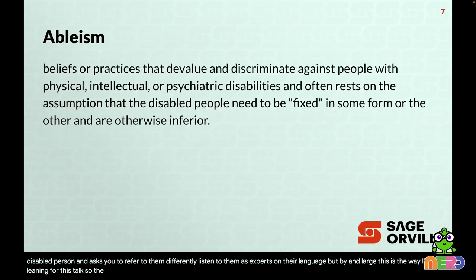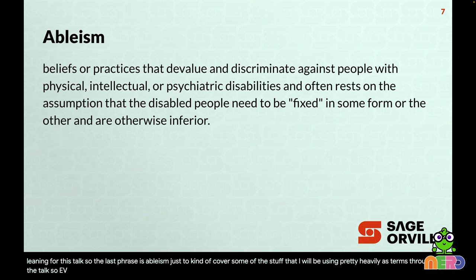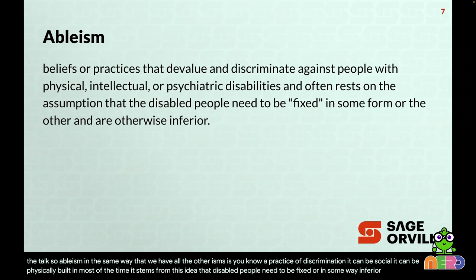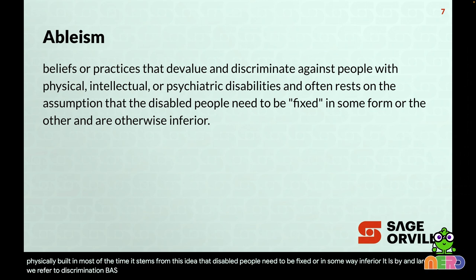The last term I'll cover is ableism. Just like all the other isms, it's a practice of discrimination — it can be social, it can be physically built in. Most of the time it stems from the idea that disabled people need to be fixed or are in some way inferior. It is how we refer to discrimination based on disability.